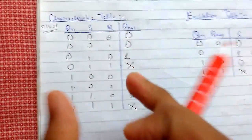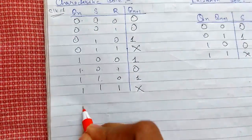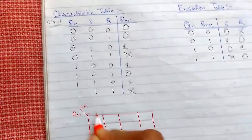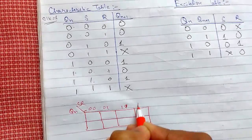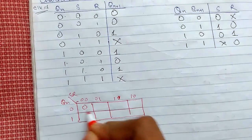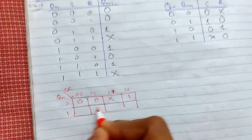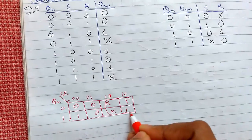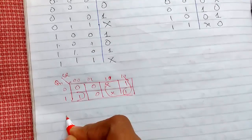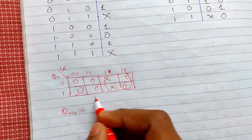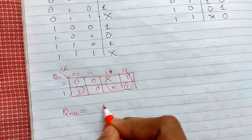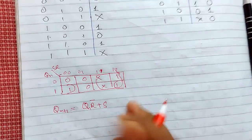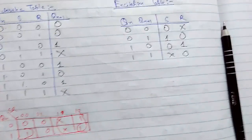Now we will see the expression for the characteristic table using a Karnaugh map. The inputs are S, R, and qn. After grouping — a quad and a pair — the expression for qn+1 is: qn+1 = S + qn·R̄, where the quad gives qn·R̄ and the pair gives S.